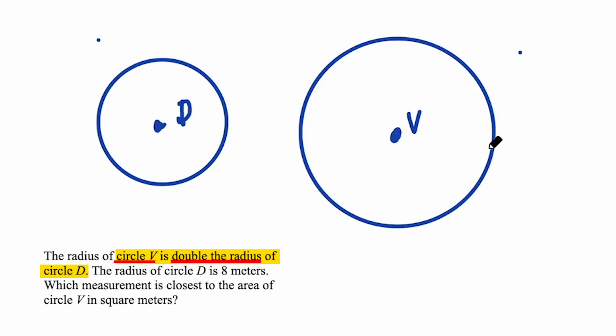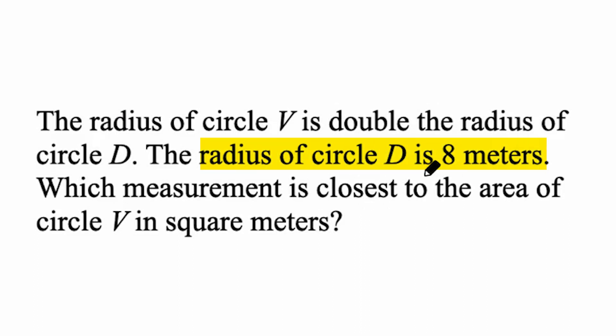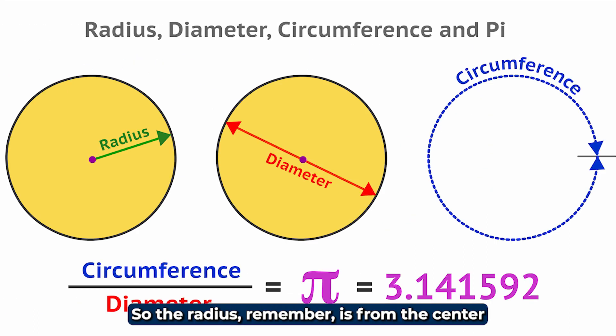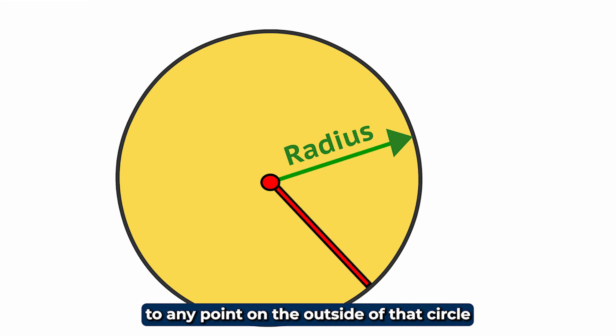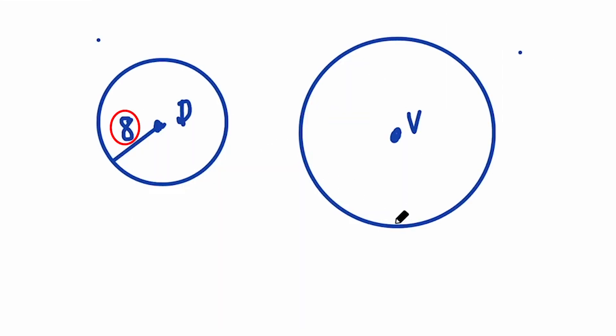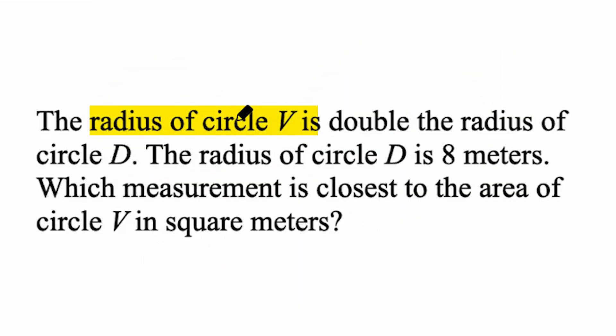They tell us that the radius of circle D is 8 meters. The radius, remember, is from the center to any point on the outside of that circle, and that apparently has a length of 8. Let's look at the language carefully: it says the radius of circle V is double the radius of circle D.